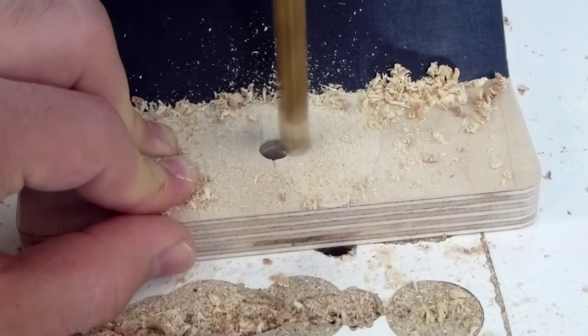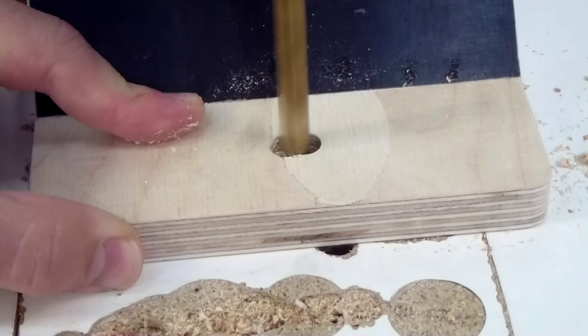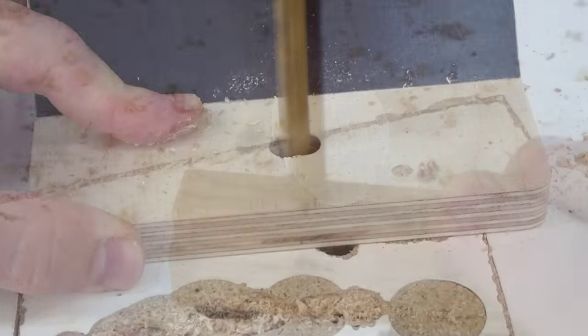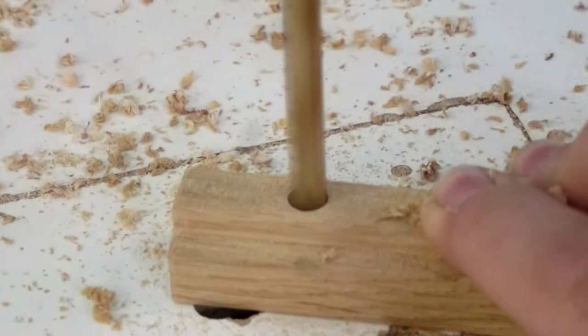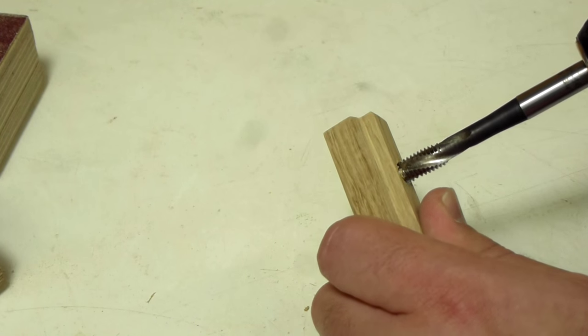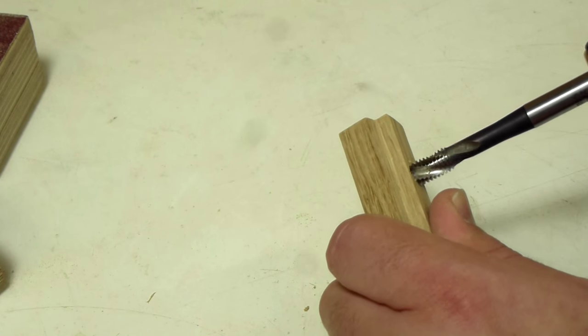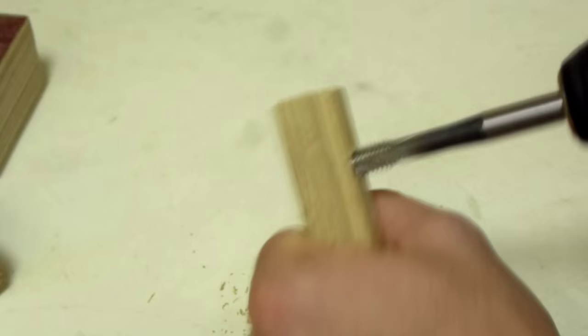Instead of a hole I created a slot by drilling two holes and in between them to allow for some adjustability. For the runner I drilled a hole and then tapped it. As taps and wood tend to be a little bit stiff I tried to loosen it by drilling in and out multiple times.